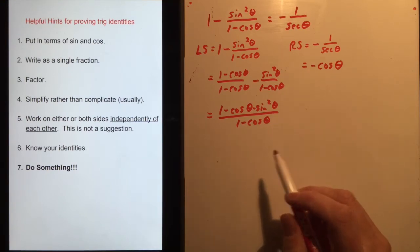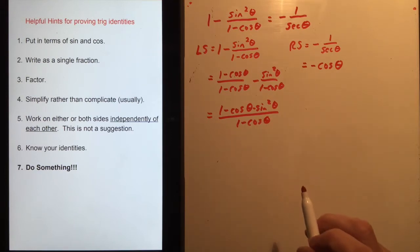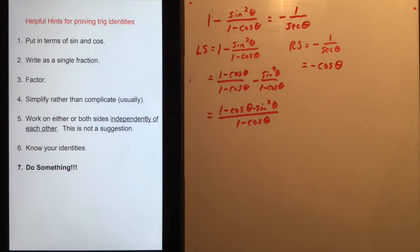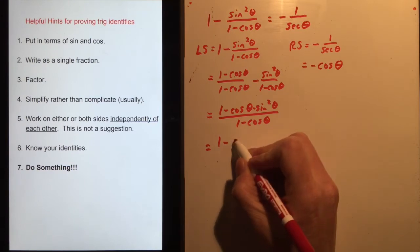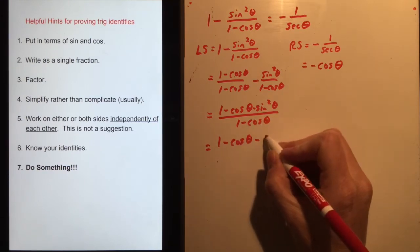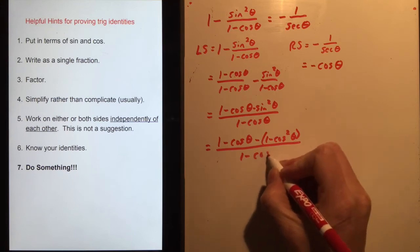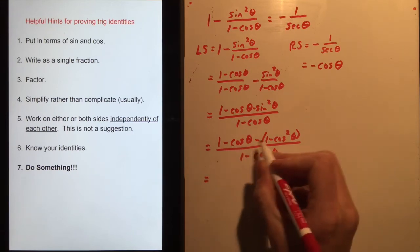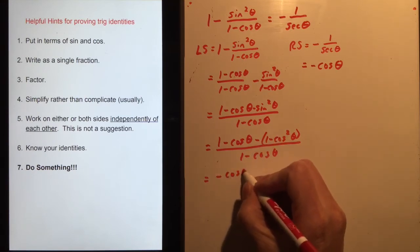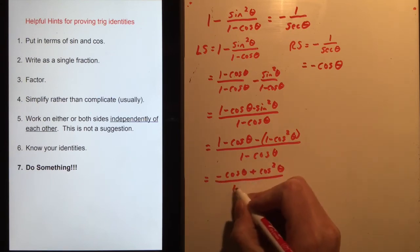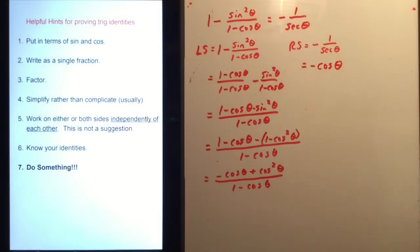Put in terms of sine and cosine — check. Written as a single fraction — check. Factor: nothing to factor yet. Simplify — that's what I'm working toward. Working on one side independently — yes. Know my identities: I can do something with sin²θ. Let's replace sin²θ with (1 - cos²θ), giving (1 - cos²θ)/(1 - cosθ). After the 1s cancel, the numerator becomes -cosθ + cos²θ. Now I can factor!